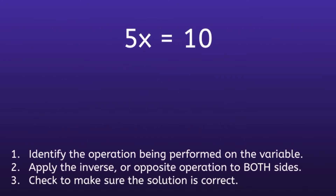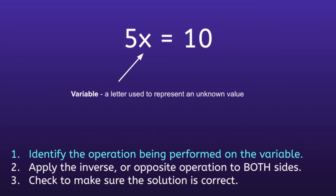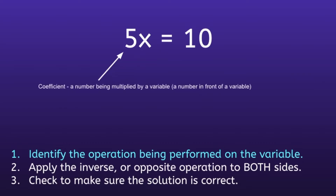Example 1: 5x equals 10. Step 1 is to identify the operation being performed on the variable. In this example, the variable is x. A variable is a letter used to represent an unknown value. The 5 in front of the variable is called a coefficient — a number being multiplied by a variable, or a number in front of a variable.